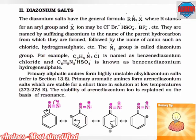Next we will discuss diazonium salts. The diazonium salts have the general formula R-N2+ X-, where R stands for any aryl group and X- ion may be chlorine, bromine, hydrogen, sulfate, etc.